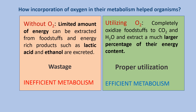How did incorporation of oxygen in their metabolism help organisms? Without oxygen, only a limited amount of energy can be extracted from foodstuffs, and energy-rich products such as lactic acid and ethanol are excreted out — so the metabolism is inefficient. While with oxygen, complete oxidation of foodstuffs to CO2 and H2O can be achieved, generating a large amount of energy. This is proper utilization, and we can say that with oxygen the metabolism is efficient.